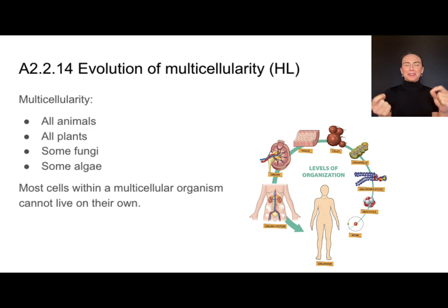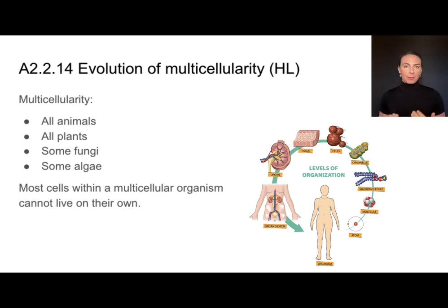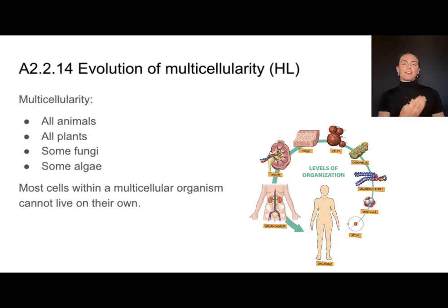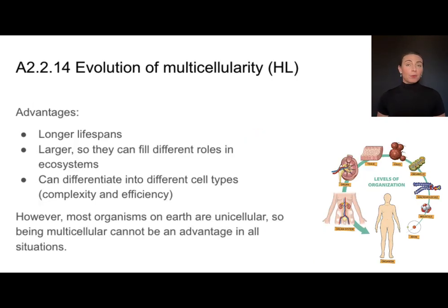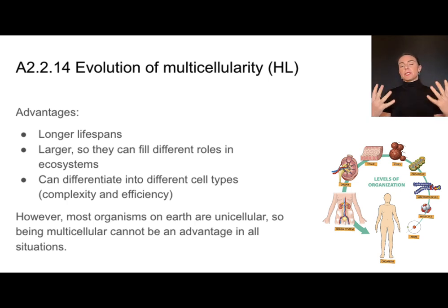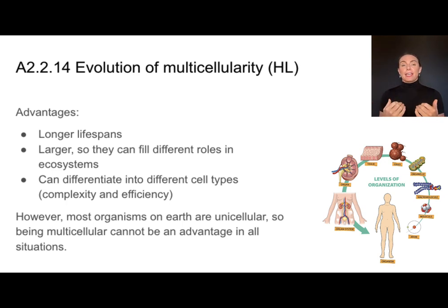What makes multicellular organisms unique is that they have specialized cells. A potential downfall of these specialized cells is that because they're doing specialized jobs, if you take them out of the organism they won't be able to survive on their own — within the organism, they rely on other cell types to perform the other functions of living things. The only way to explain why multicellularity is found in so many organisms is that there must be an advantage. Most multicellular organisms have much longer lifespans, grow to different sizes, can exploit different niches or roles in ecosystems, and can differentiate into multiple cell types — meaning together they can live a much more efficient life with specialist cells.